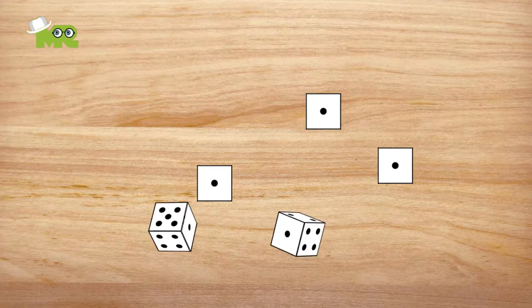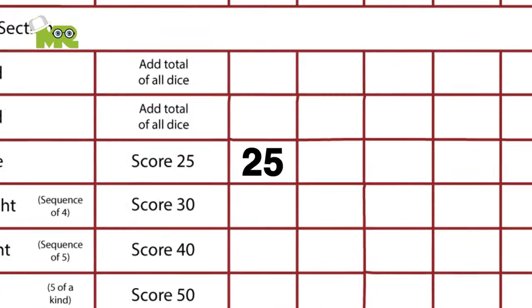The player will do the same after rolling for the second time. After the third attempt, the player is required to choose a box to score on the scorecard.